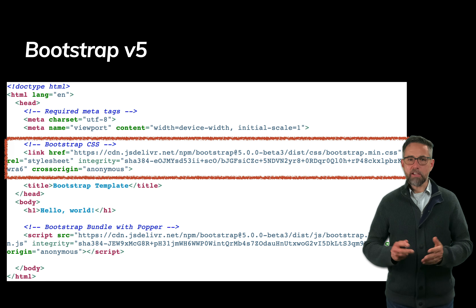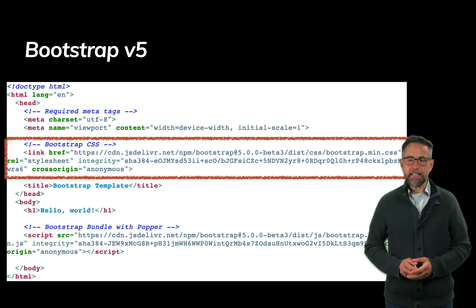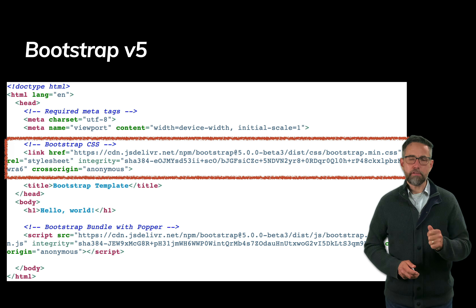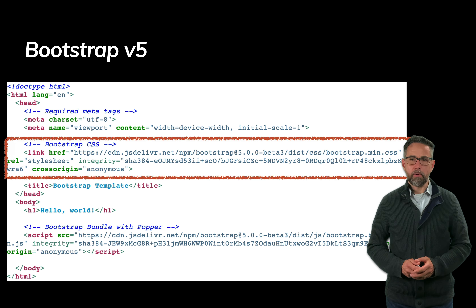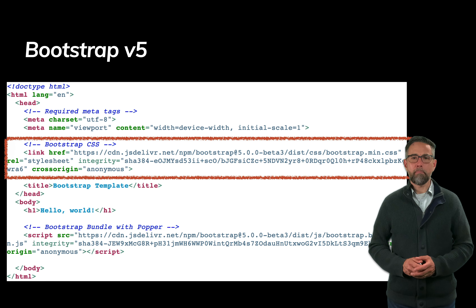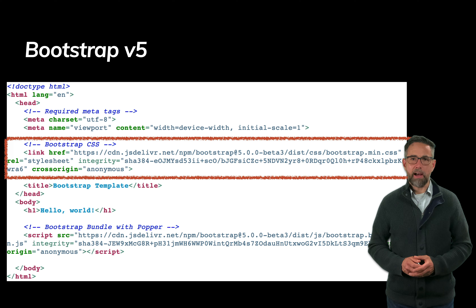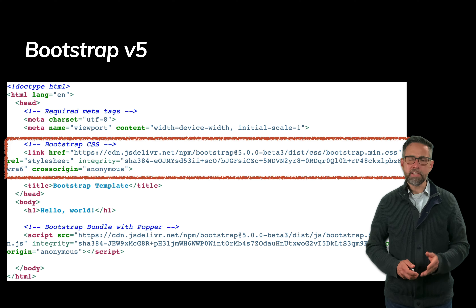The link has an href, a rel of stylesheet, and an integrity attribute. The integrity attribute presents a fingerprint of the file being downloaded — the browser compares the downloaded CSS file against this fingerprint to verify they match. We do this because we don't want a malicious third party on jsdelivr.net to introduce unexpected CSS. The crossorigin attribute then asks the browser to enforce that integrity check.